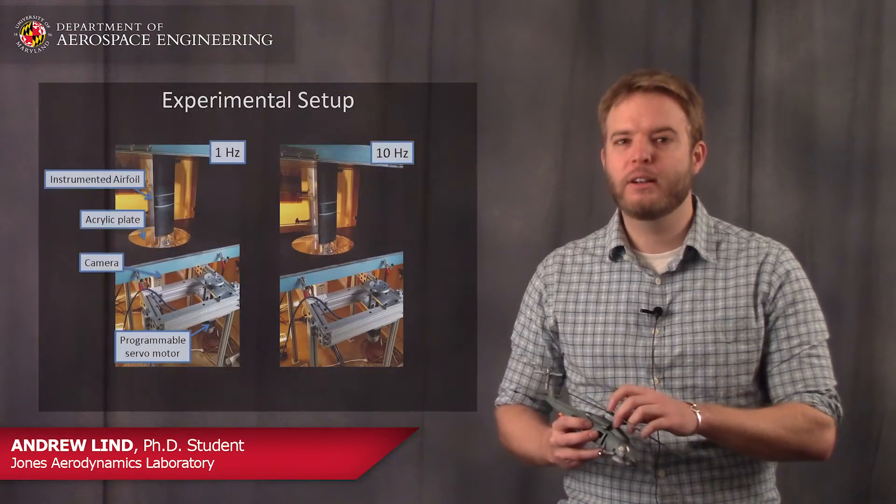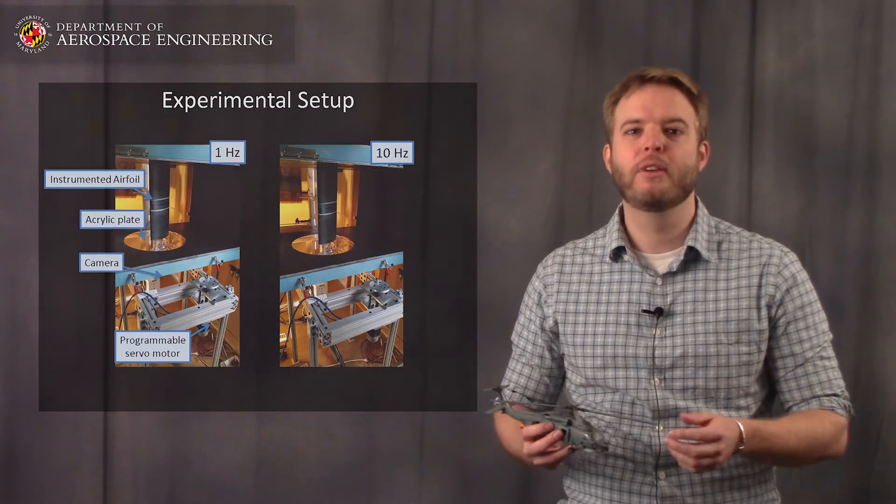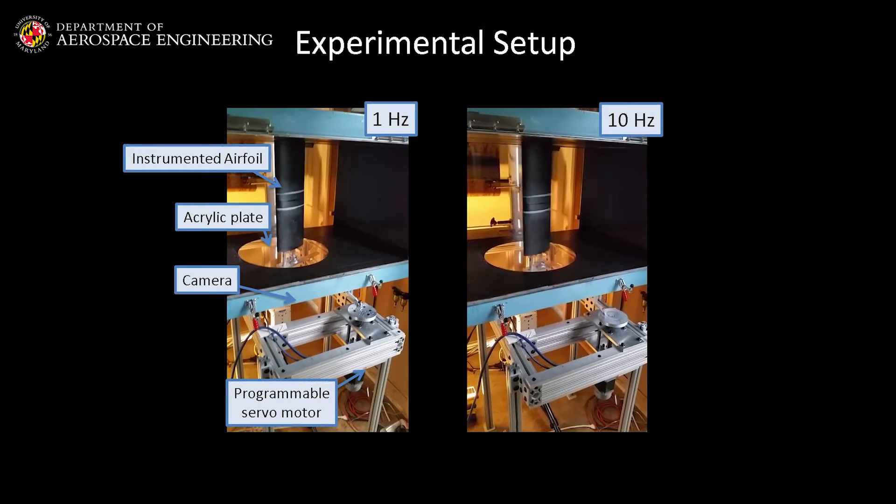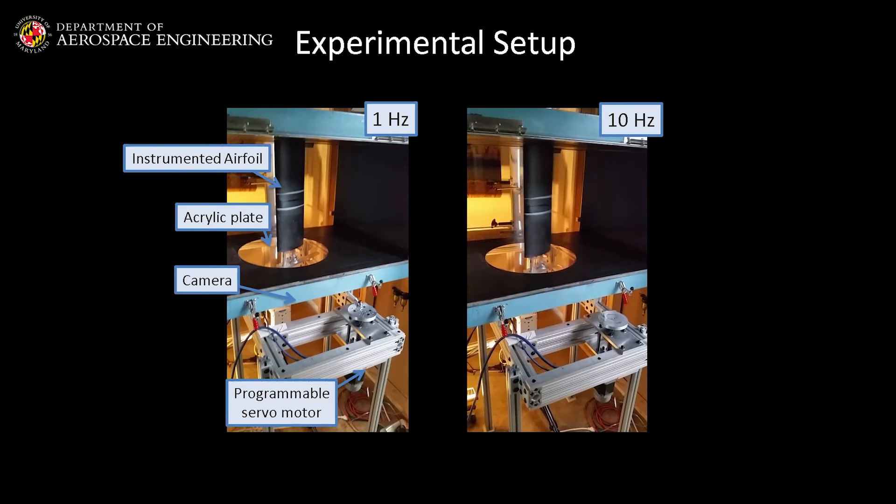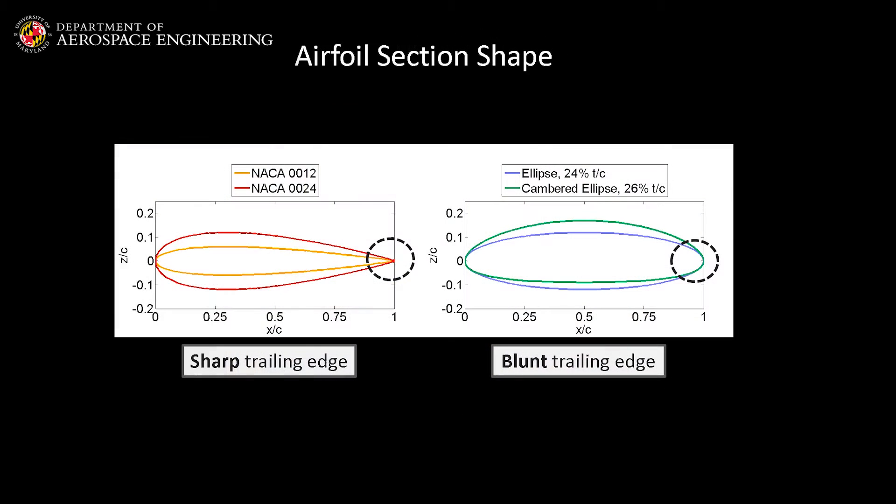My work looks at rotor blades and studies them experimentally in wind tunnels, looking at the forces and the flow fields around these rotor blade airfoil sections. I'm looking to see if the shape of the rotor blade airfoil section affects the performance, and if so, how.